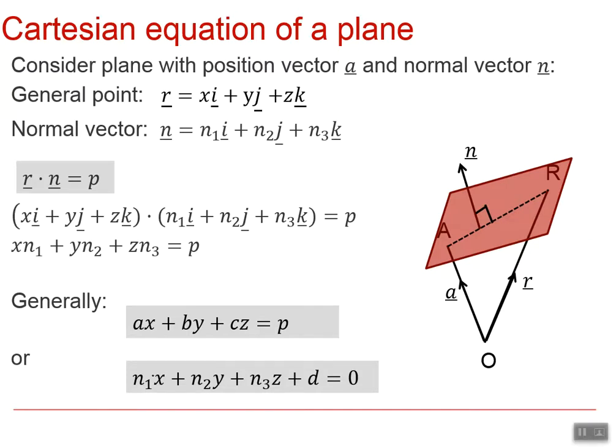In these equations a, b, c or n₁, n₂, n₃ give us the vector that is normal to the plane. All planes that have the same normal vector are parallel to each other, and this p or d as it's written here gives us the location of that plane.